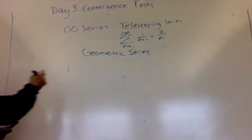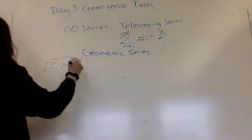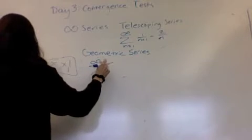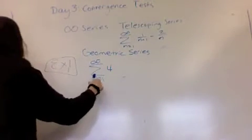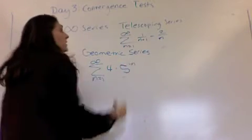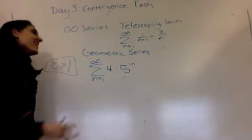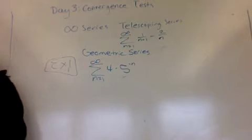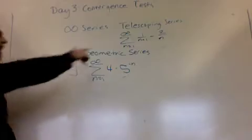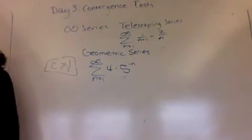Let's do some examples in your packet. Example number one — forgive the notation, it says one on the bottom; it should say n equals one. So, convergent or divergent? Yell it out. Convergent! Convergent, smarties. But it doesn't look like anything we know. How is that convergent? Geometric, right? Don't be tricked.